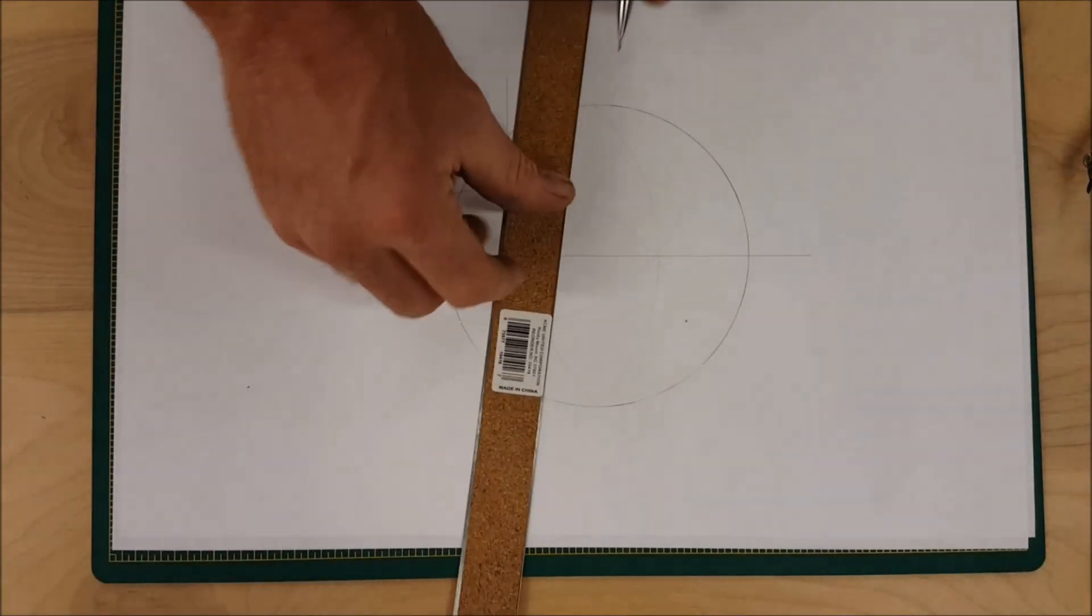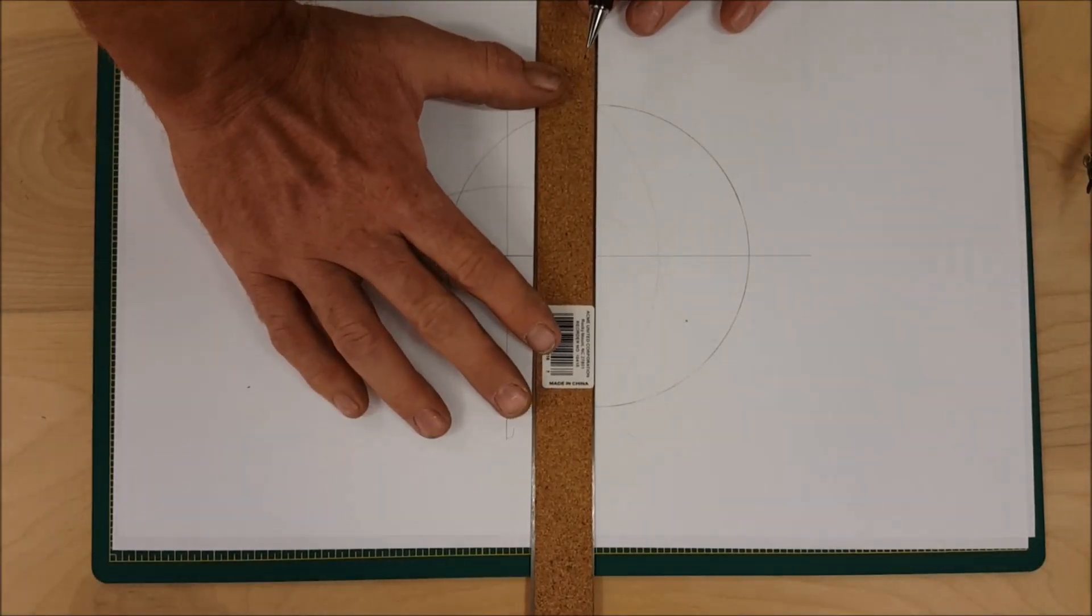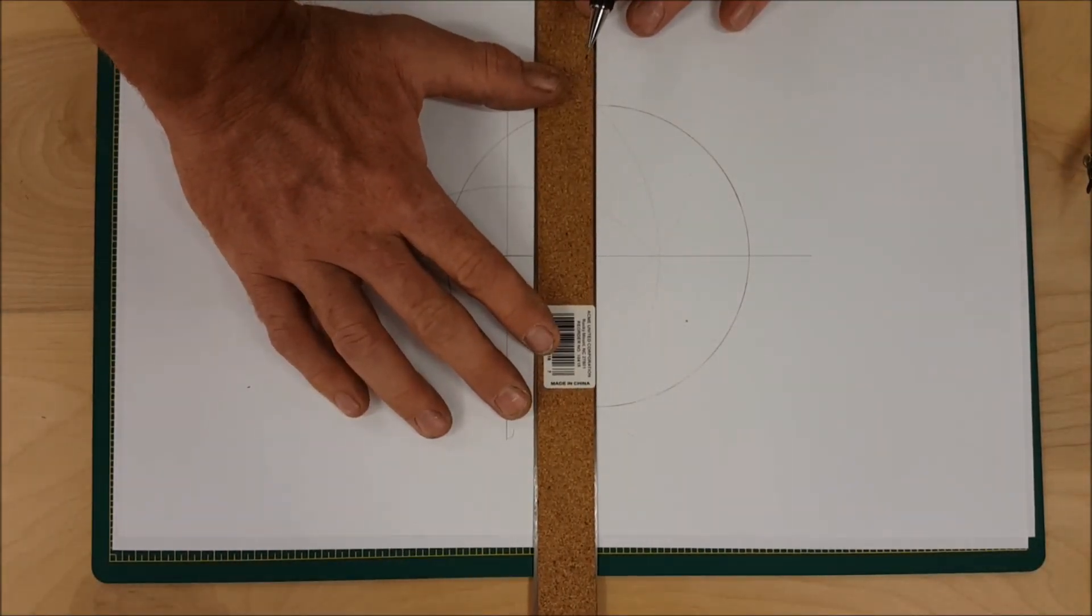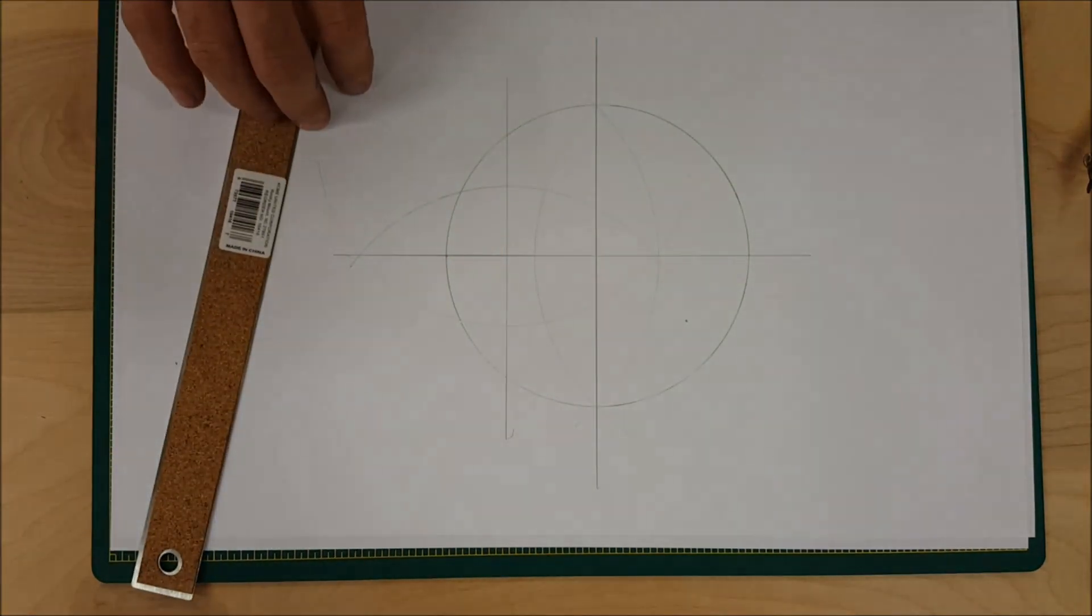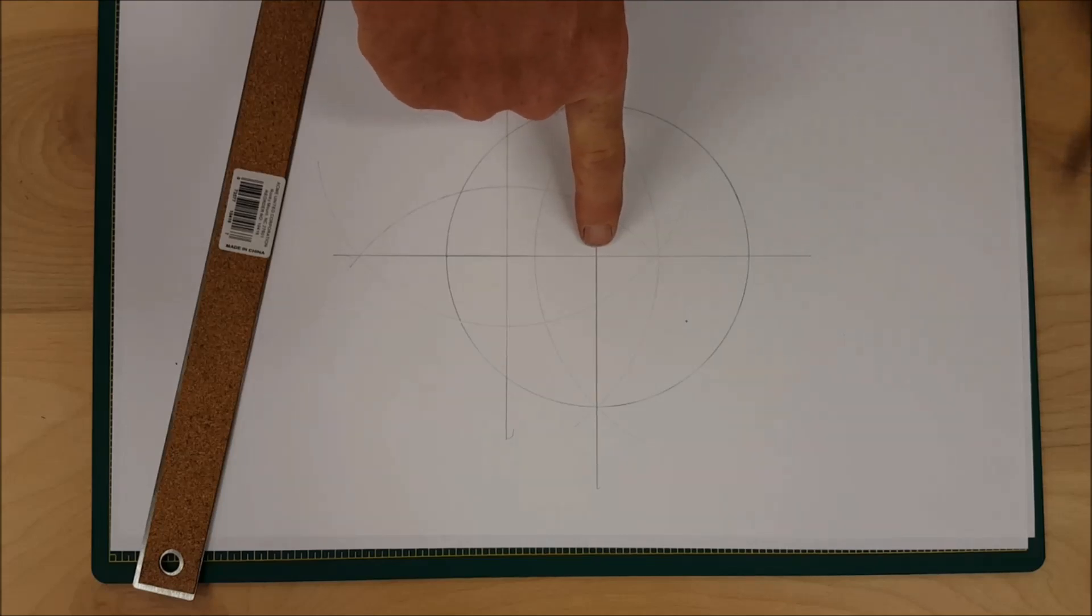And now I'm going to draw a line through those. That crosshair is the center of the circle.